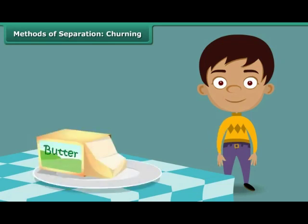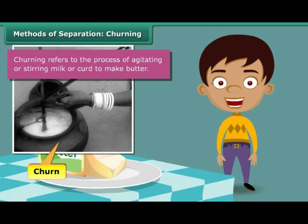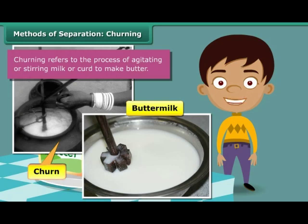This is butter. Do you know how butter is made? When milk is stirred vigorously in a churn, butter is obtained. The liquid left behind is the tasty, nutritive buttermilk that is relished by many as a refreshing summer drink. Two useful components emerge from a mixture when this method of separation is employed.